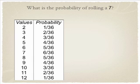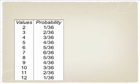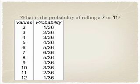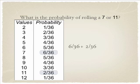What is the probability of rolling a 7? That would be 6 over 36. How about rolling an 11? That would be 2 over 36. So what is the probability of rolling a 7 or 11? Using the Addition Law, it is 6 over 36 plus 2 over 36, which equals 8 over 36.